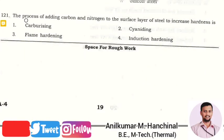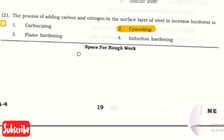The next question is: the process of adding carbon and nitrogen to the surface layer of steel to increase the hardness is? The right answer is option two, that is cyaniding.